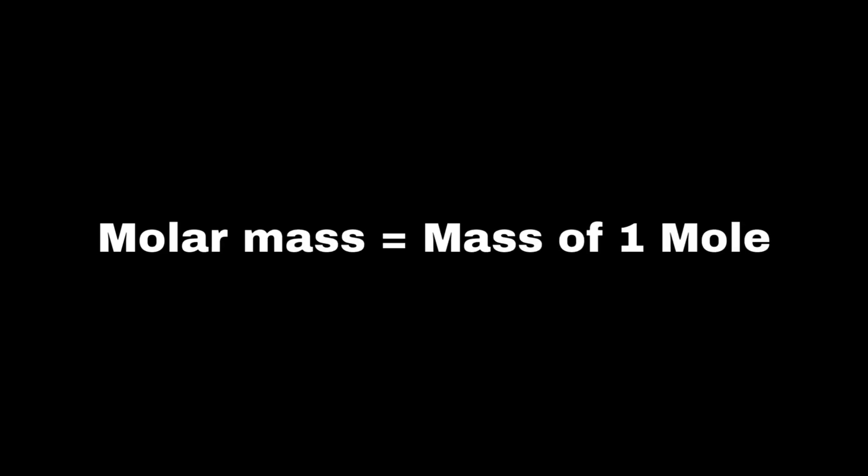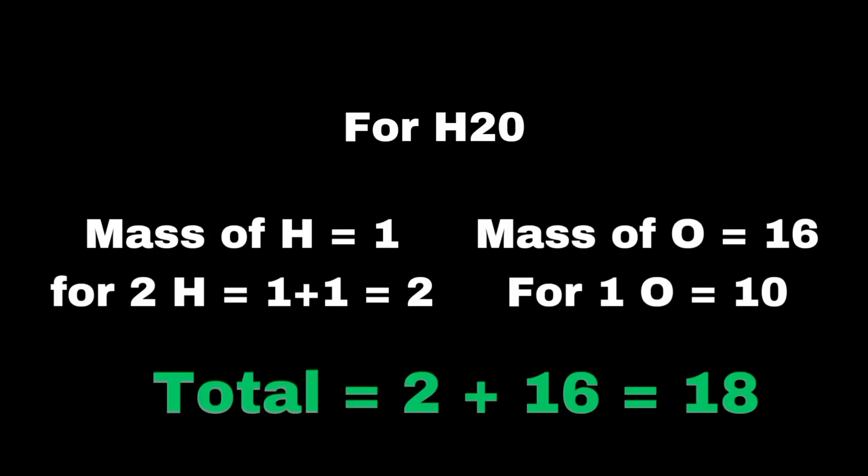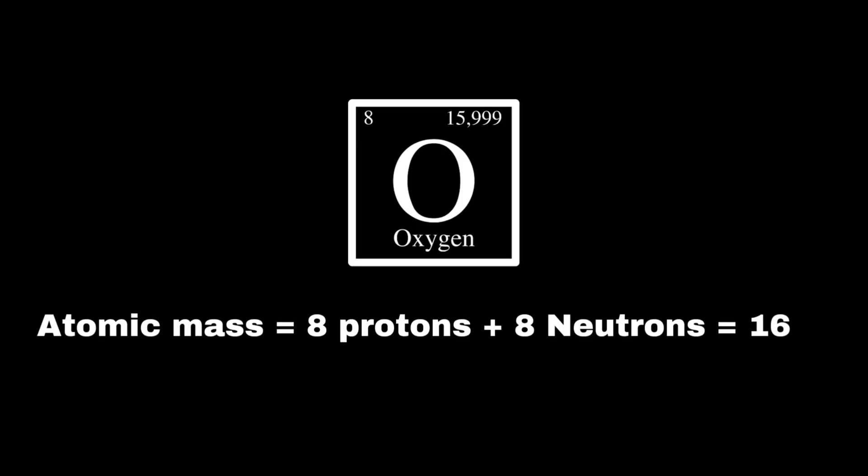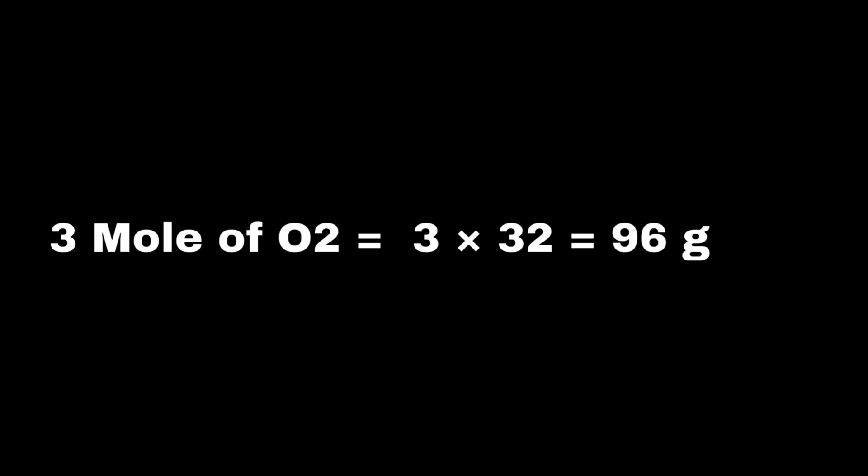In mole-to-mass calculations, we take the number of moles of a substance and convert it to mass using its molar mass. The molar mass is the mass of one mole of a substance, measured in grams per mole, and can be found by adding up the atomic masses of the elements in a compound. For example, if you have three moles of oxygen, each oxygen atom has a mass of approximately 16 grams per mole, and since O₂ has two oxygen atoms, its molar mass is 32 grams per mole. To convert moles to mass, you multiply the number of moles by the molar mass: three moles × 32 g/mol = 96 grams of oxygen.